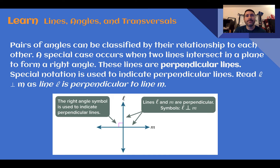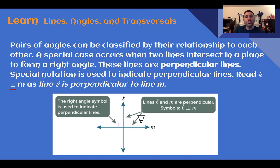Lines, angles, and transversals. Pairs of angles can be classified by their relationship to each other. A special case occurs when two lines intersect to form a right angle — these lines are called perpendicular lines. Special notation is used to indicate perpendicular lines. In our picture, perpendicular lines usually have a little box in the corner to indicate that the angle is 90 degrees.